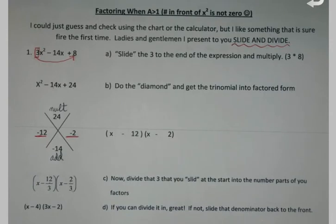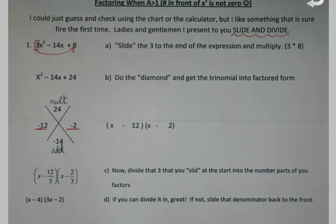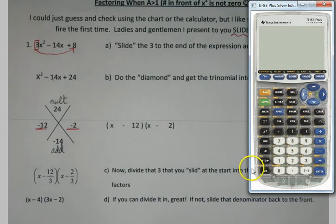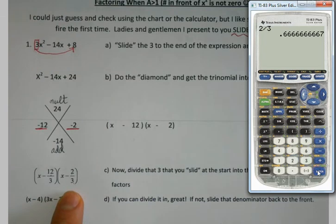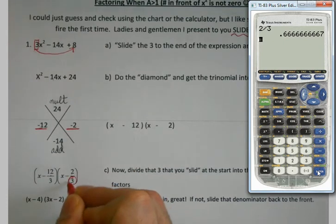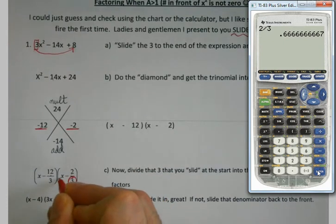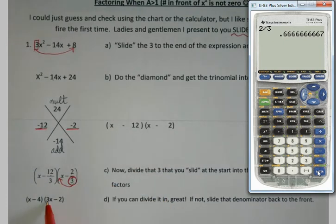If it goes in nice, 12 divided by 3 does go in nice, it's 4, I just leave it. But if I go to plug it in and I try to divide it, like 2 divided by 3 and I get the infamous decimal, then I don't leave it as 2 over 3. Whatever this denominator is, I slide it back to the front of the problem.